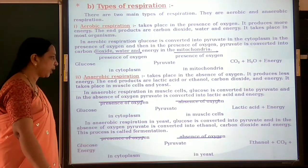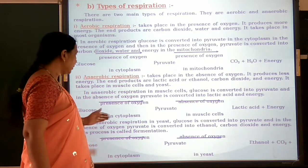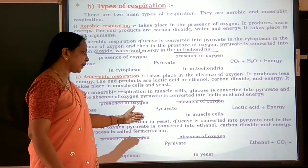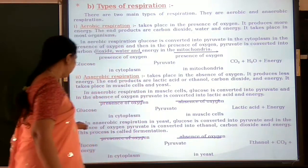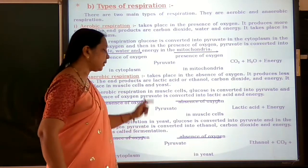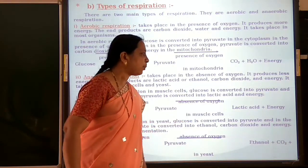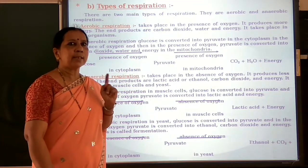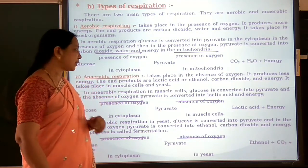In anaerobic respiration in yeast — fermentation, which you have learnt previously — the yeast cell undergoes anaerobic respiration. Glucose is converted into pyruvate in the cytoplasm, and then pyruvate in the absence of oxygen gets converted into ethanol, carbon dioxide and energy. The first step is the same: a six-carbon molecule, glucose, gets converted into pyruvate.